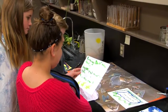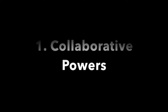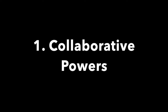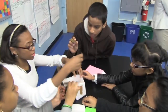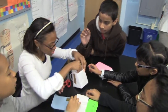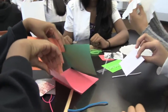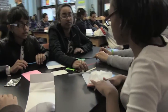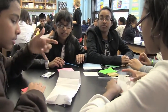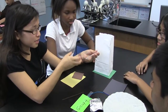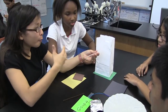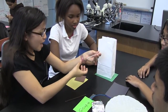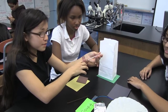Two things ensure that teams work together. First, collaborative powers. Some powers allow all students on the team to get benefits, such as all team members getting a hint on an exam question. Thus, students want their team members to participate in class so they can level up and use those powers to benefit the team.